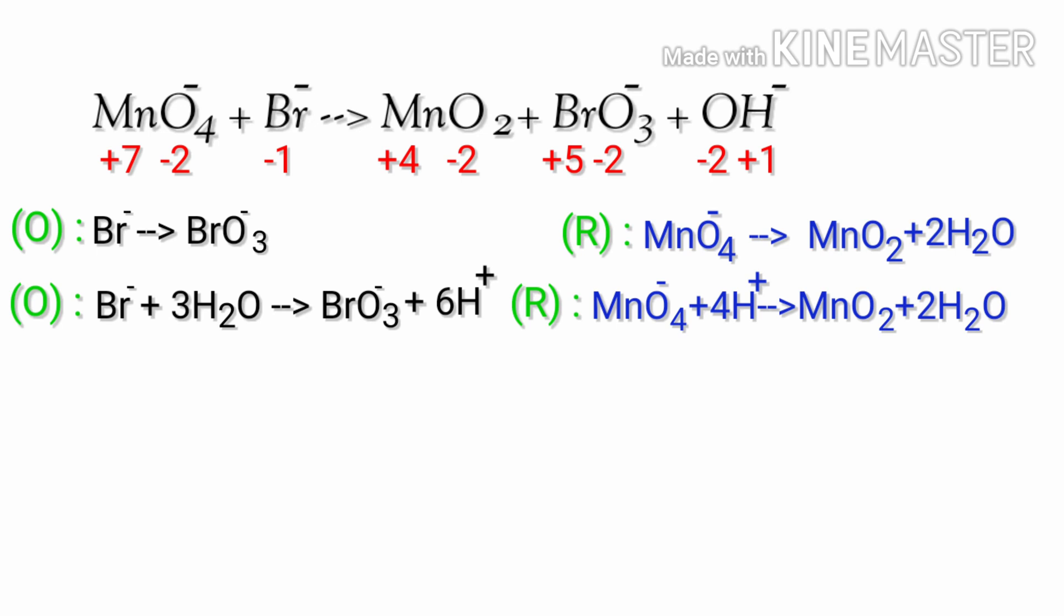For a redox reaction, the addition of charges on both sides should be equal. So try it in the oxidation half reaction. Both sides are not equal, to make them equal, you should add electrons as a counter protons. Thus if you think of adding 6 protons to left side to make it equal to plus 5, it is wrong. But you can add 6 electrons to right side to make it equal to minus 1.